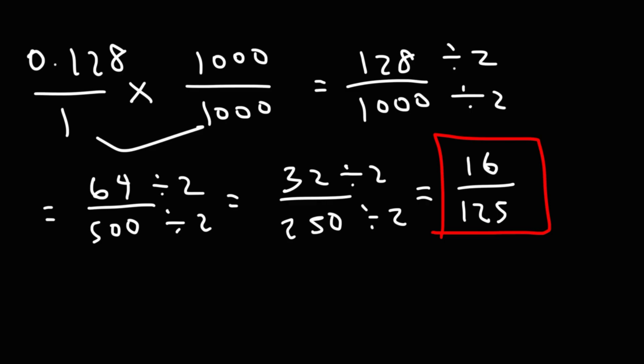So, that's how you can convert a decimal to a fraction. So, if you have a number that goes to the tenths place, multiply it top and bottom by 10. If it goes to the hundredths place, multiply the decimal top and bottom by 100. If the number goes to the thousandths place, you want to multiply that number top and bottom by 1,000.